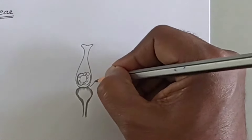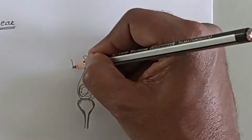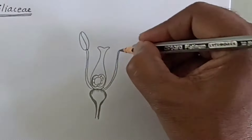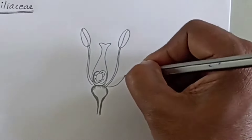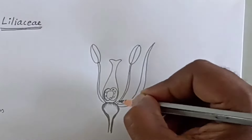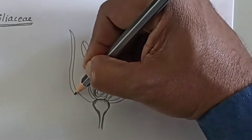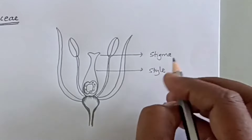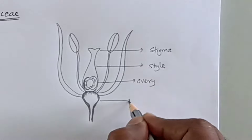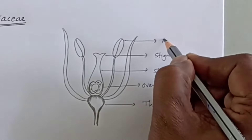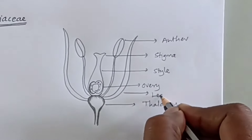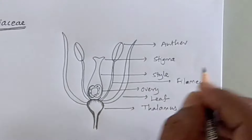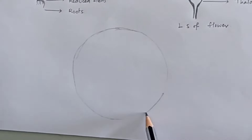Now we draw the stamens. The stamens have filaments and anthers. Here is the stigma, style, thalamus, anther, leaf, and filament. This is the LSA flower.